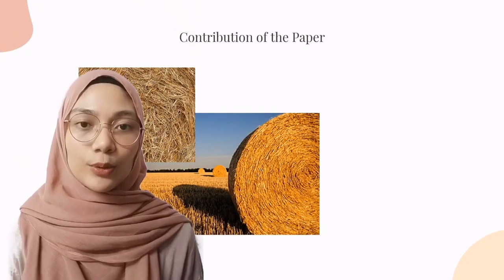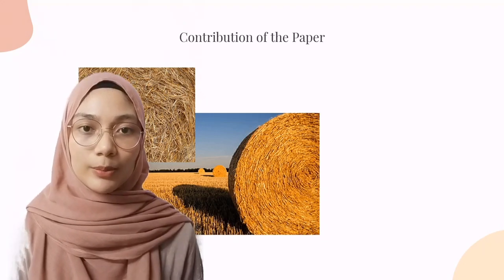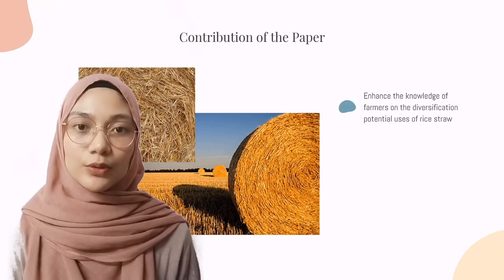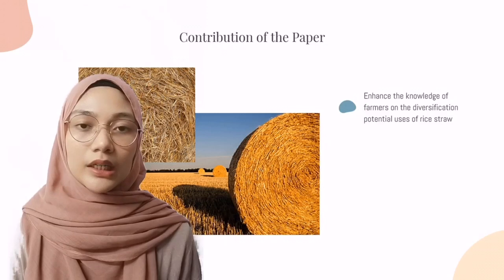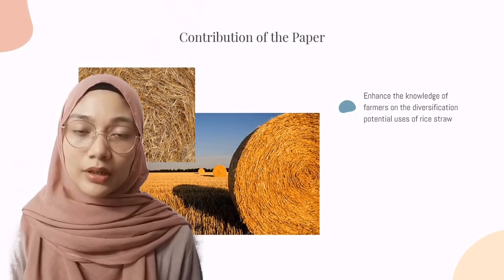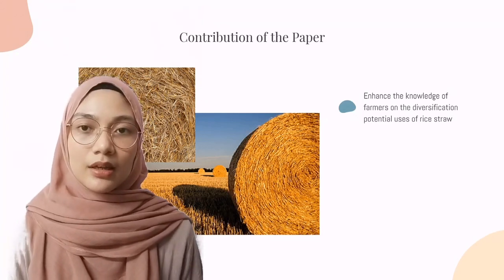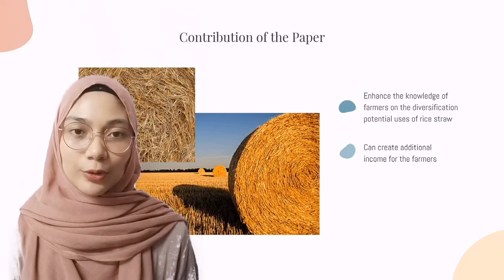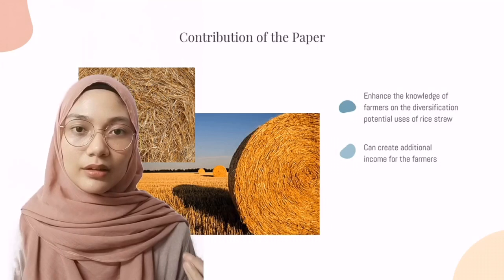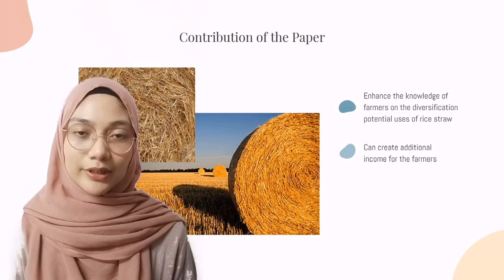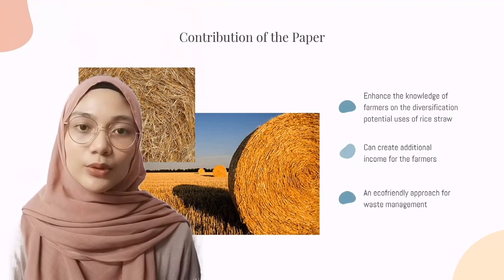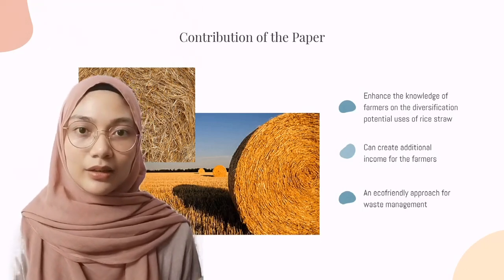The rice straw in Malaysia is mainly disposed of by open burning. The production of paper from rice straw can increase farmers' knowledge on the diversification of straw potential uses. Without this understanding, rice straw can simply be burned in the field as an agricultural waste. This paper production from rice straw could benefit farmers as it can generate additional income for them. Also, it contributes to an eco-friendly approach for waste management in the rice sector.